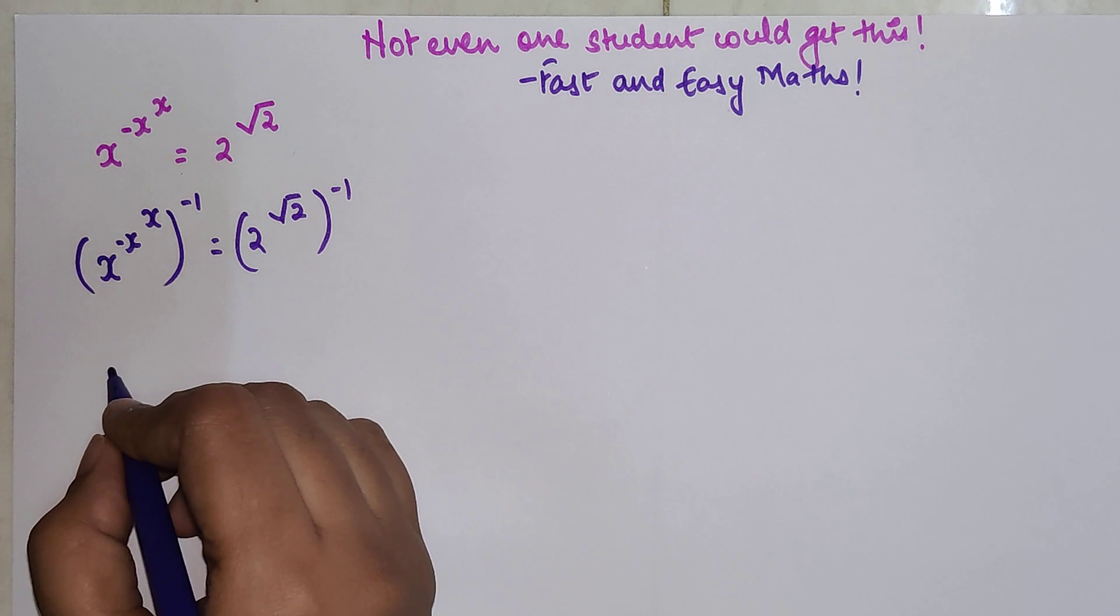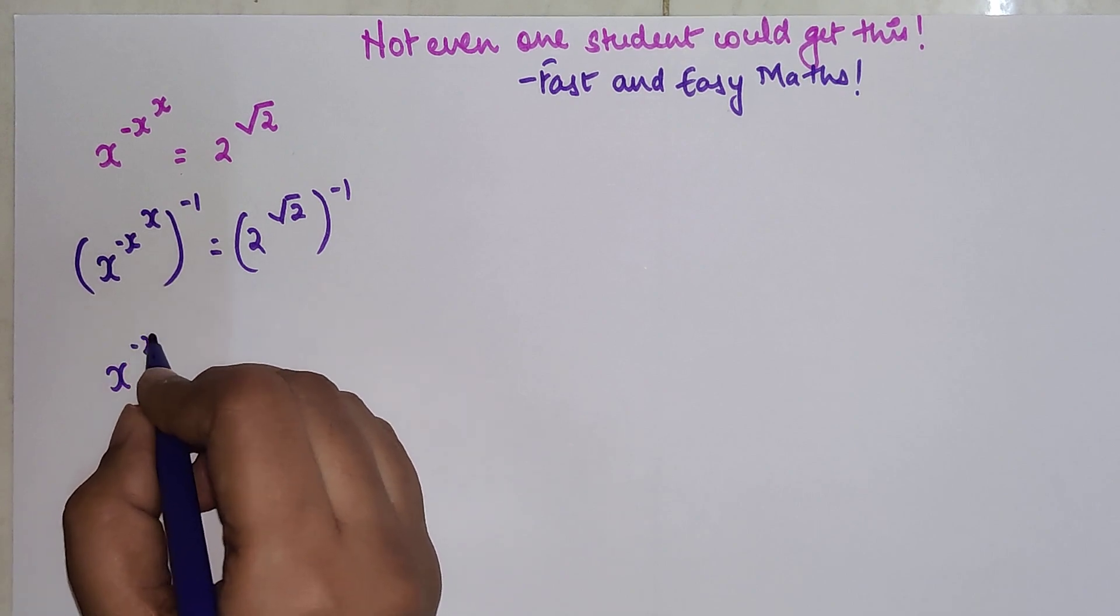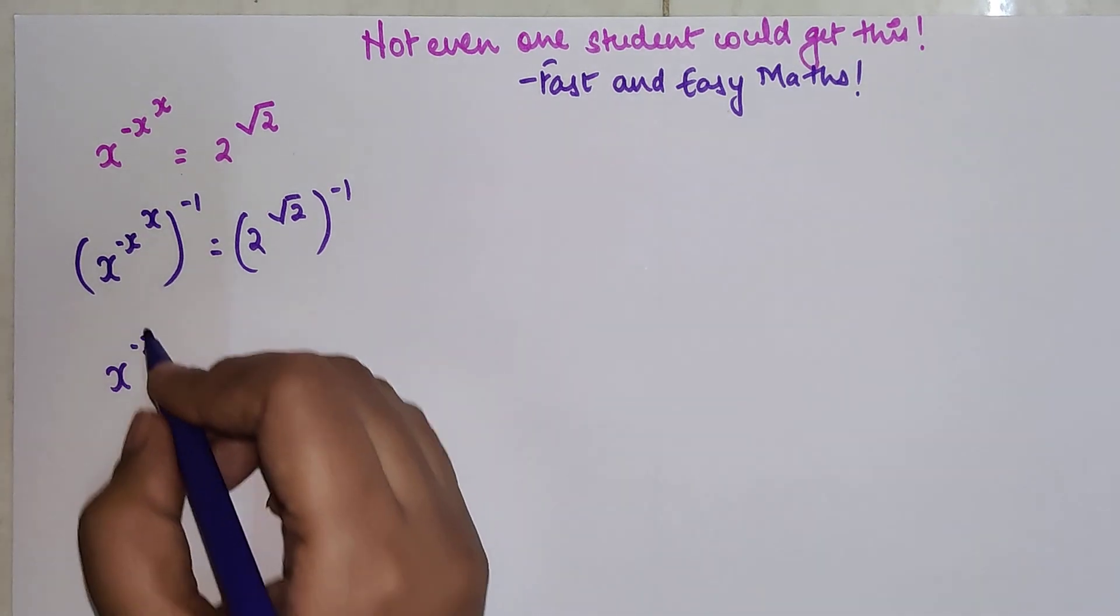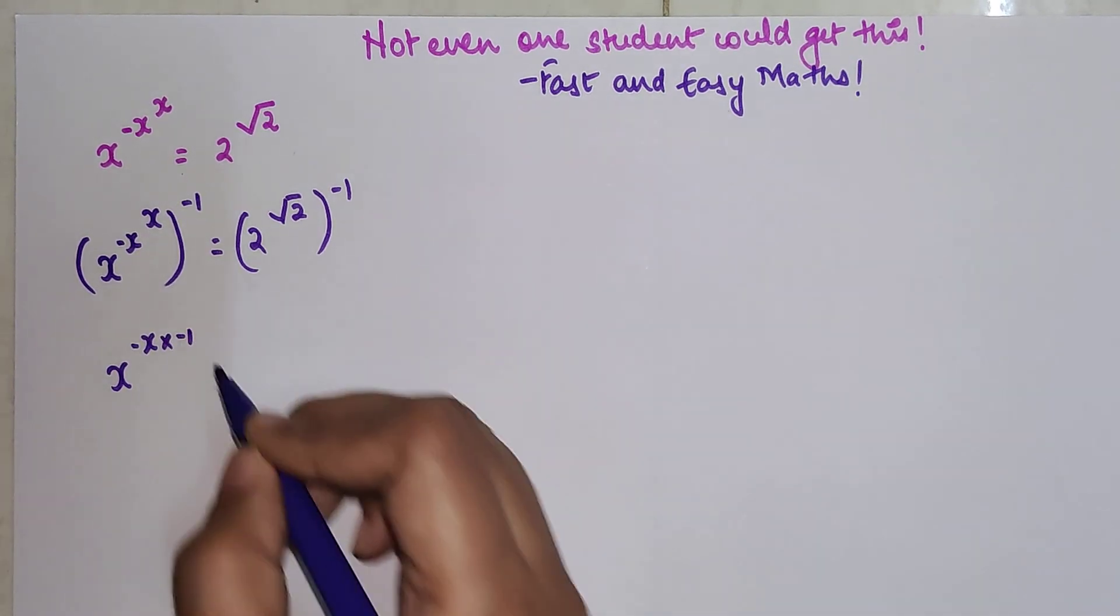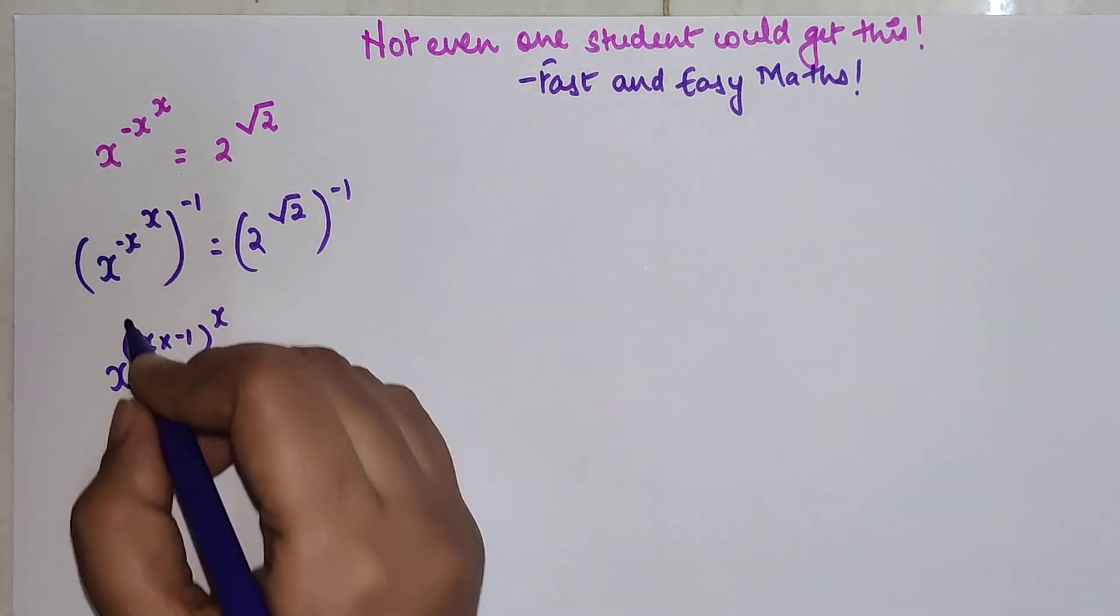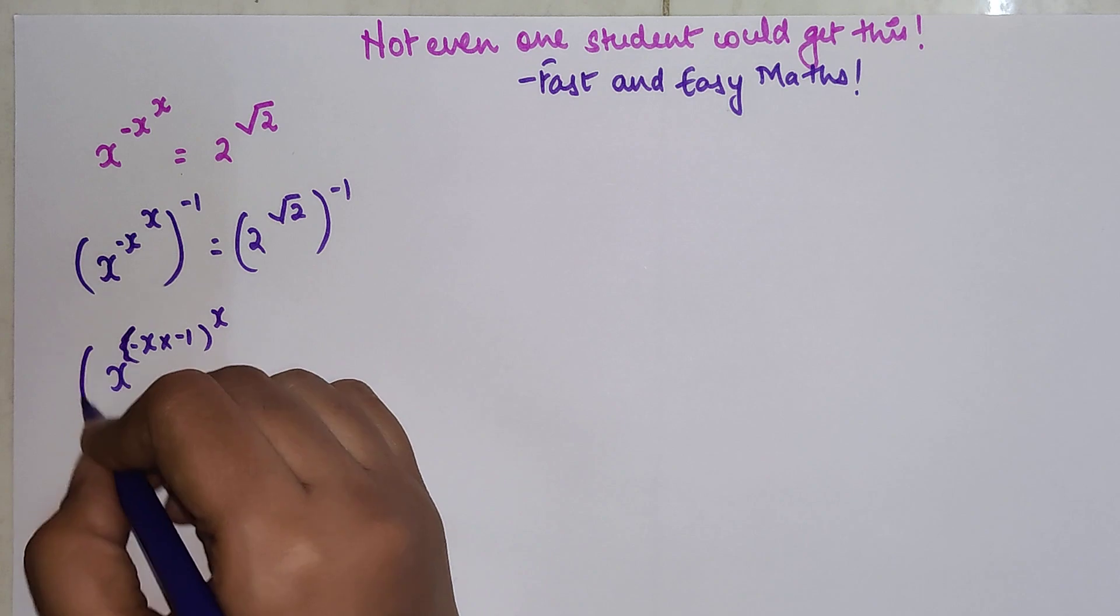So here my question now changes to x raised to minus x. This negative 1 can get multiplied by this one or can get multiplied by this minus x as well. So I am multiplying it over here and this is still raised to x.